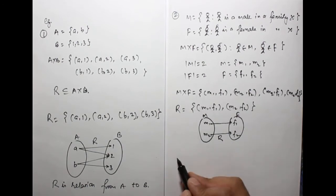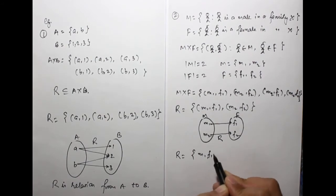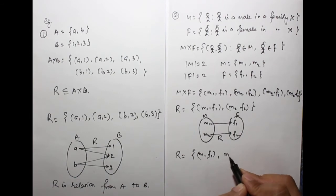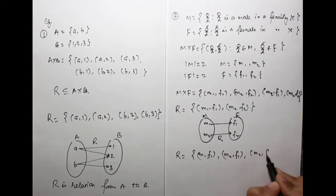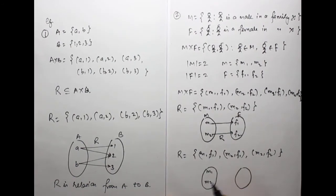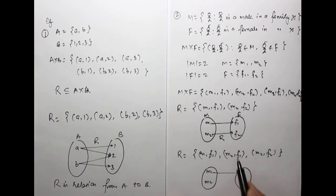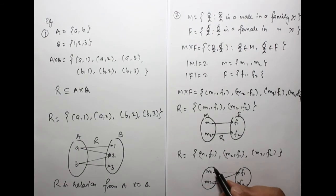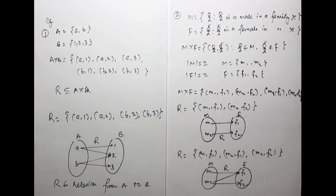If we take another relation R equals {(M1,F1), (M2,F1), (M2,F2)}, then by diagram with M on the left side and F on the right, M1 is related to F1, M2 is related to F1, and M2 is related to F2. This is the arrow diagram for this family relation R from M to F. You can define many such relations as subsets of M cross F.